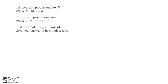Here I'm told that y is inversely proportional to d squared, when d is equal to 10 and y is equal to 4. I'm then told that d is directly proportional to x squared when x equals 2 and d equals 24. I'm asked to find a formula for y in terms of x, linking these two equations together, and to give my answer in its simplest form.